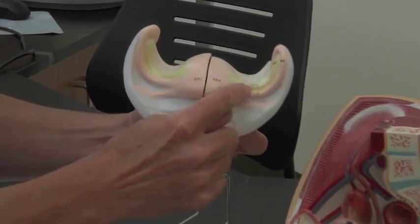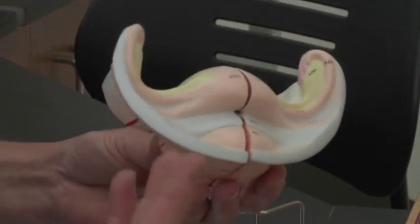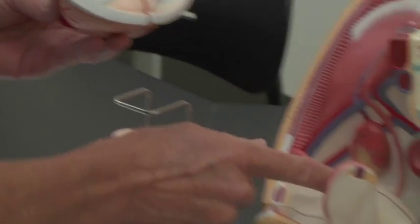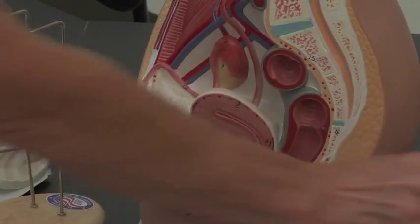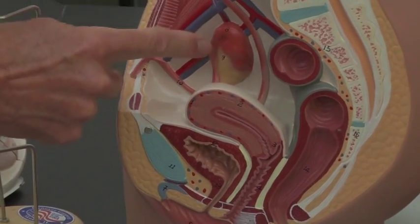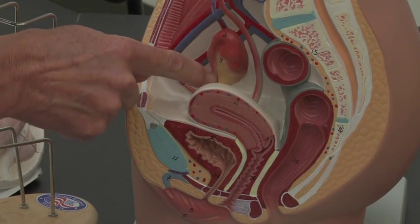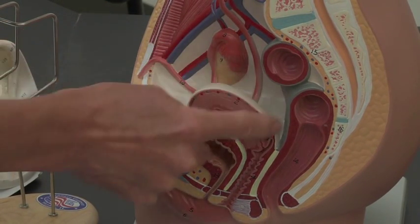There's your fallopian tube that goes into the uterus. Now if you look at the uterus there's three main regions. I'm going to take that off—there's your ovary and then there's your infundibulum of the fallopian tube with the fimbria coming down, and then that's the fallopian tube going down into the uterus.